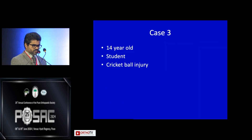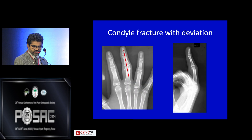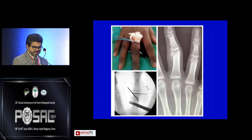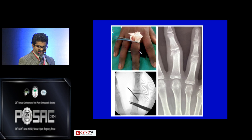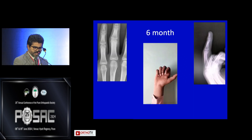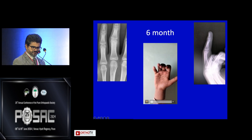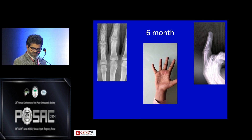Another case: a 14-year-old student with a cricket ball injury showing a condyle fracture with deviation. We performed a Kapanji K-wire and also fixed the condyle. After six months he achieved good range of motion, good healing, and correction of the deviation.